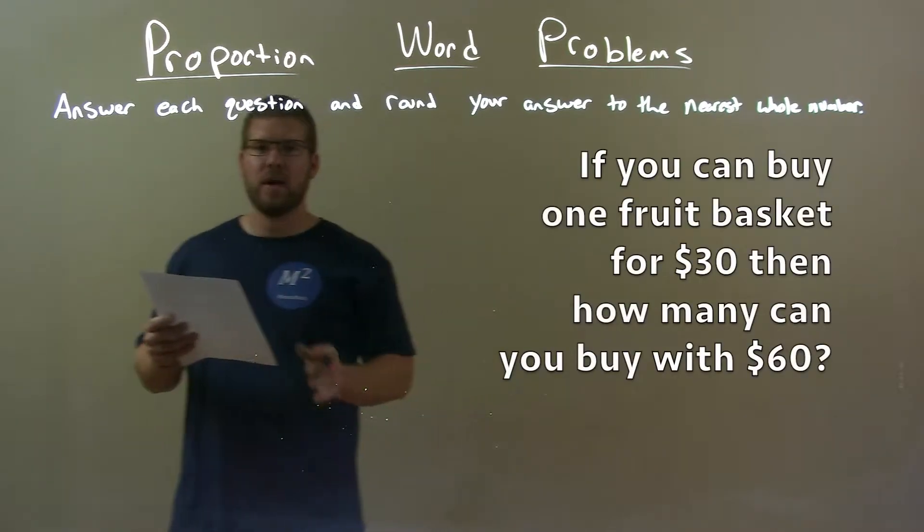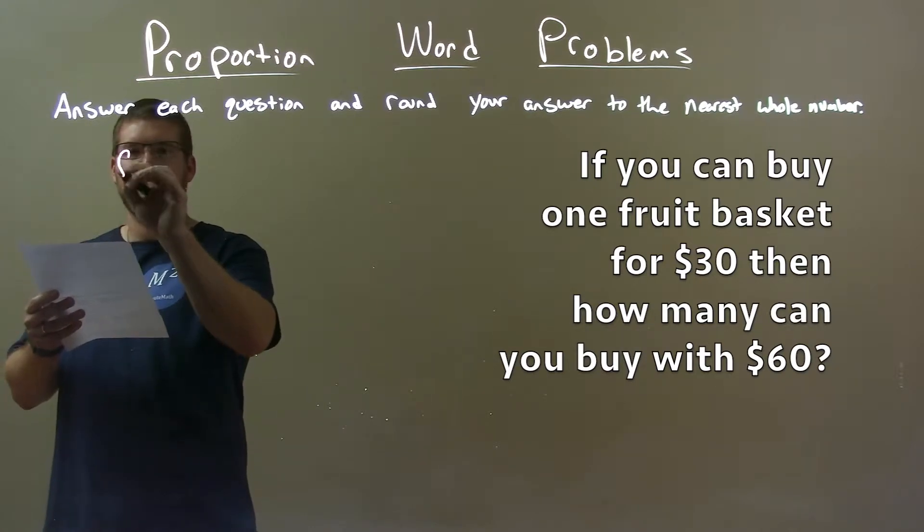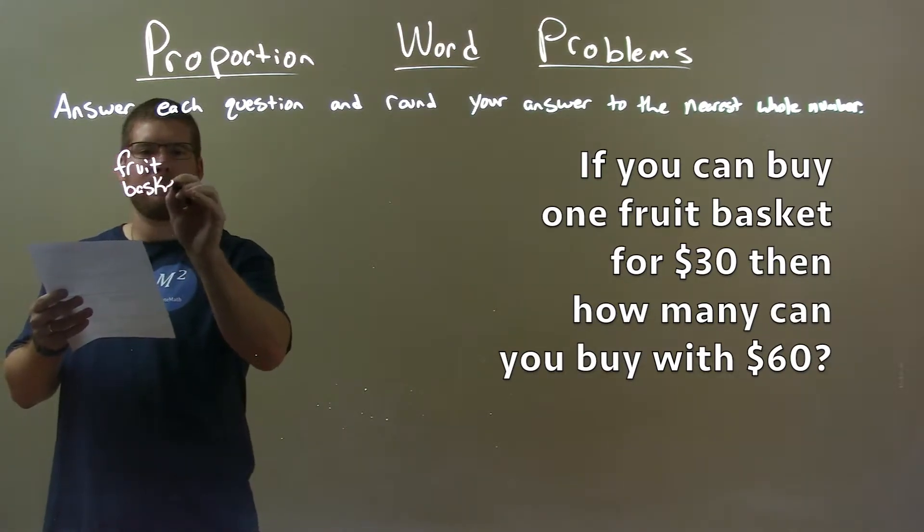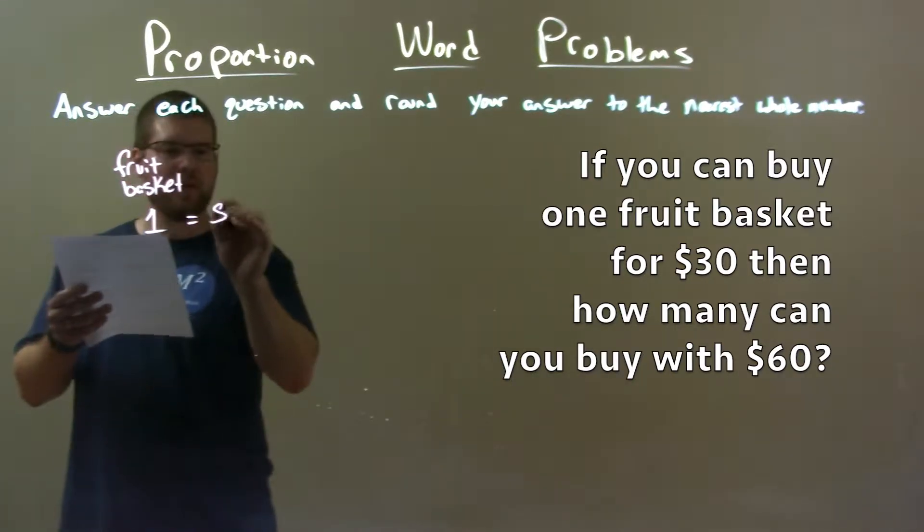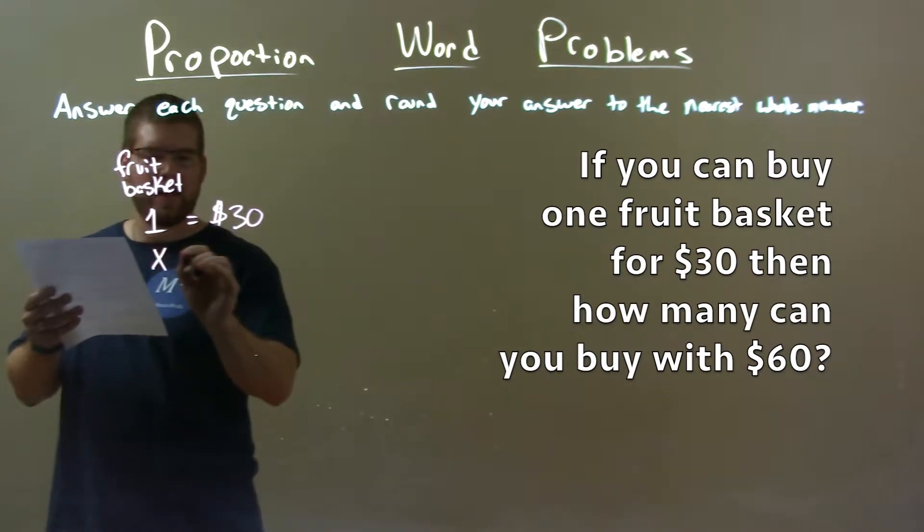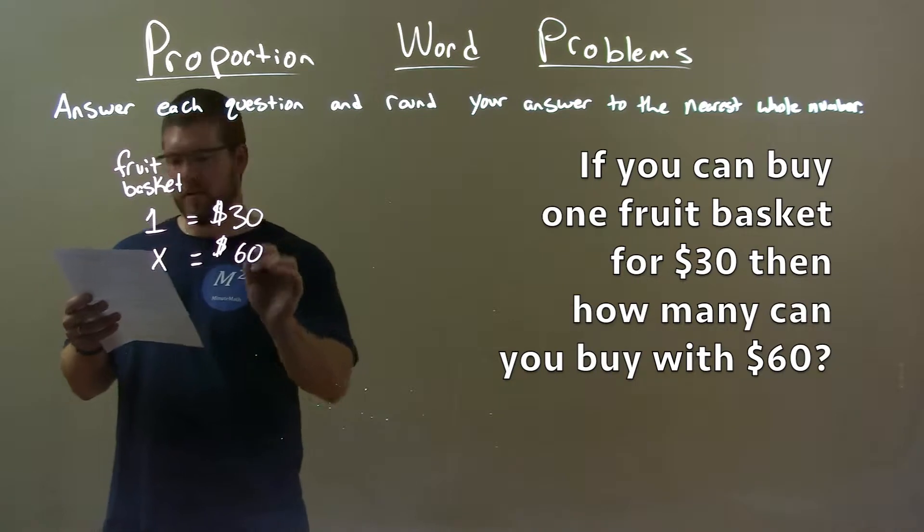So let's set what we know here. We know one fruit basket, so we have the number of fruit baskets here. One fruit basket is equal to $30. How many fruit baskets, x, can we buy with $60? Alright.